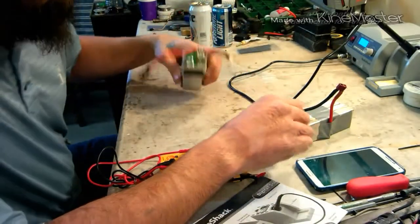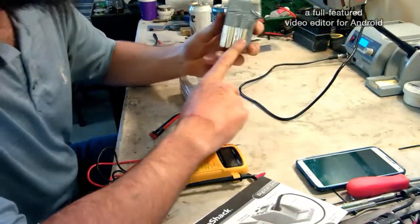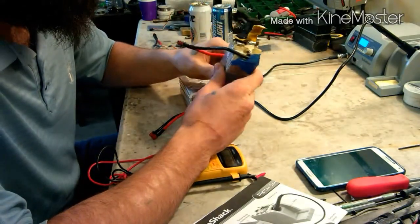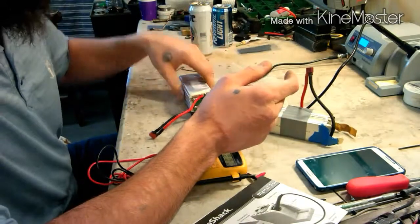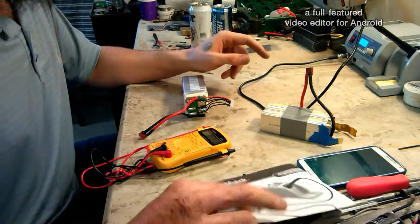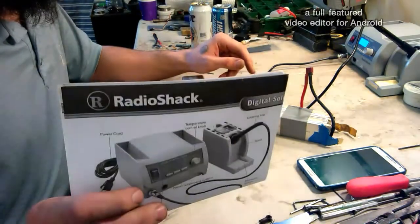Alright, so this is the bad cell. We're going to pull a cell off of this battery pack here to fix this five cell. Trusty battery tester here, solder iron we're using, Radio Shack.